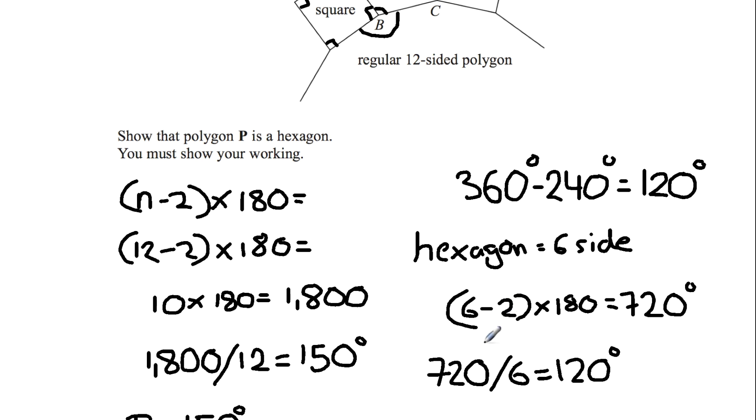So therefore I've just proved that polygon P is a hexagon, because both of the angles are the same, 120 degrees. Thank you for watching.